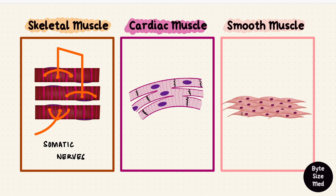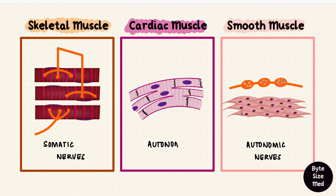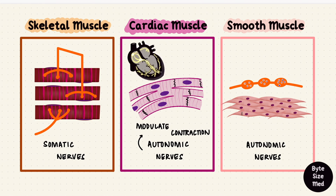Smooth muscles are supplied by autonomic nerves — the sympathetic and parasympathetic system — but they have varicosities at their terminations containing the neurotransmitter. Cardiac muscles are supplied by autonomic nerves as well, but these nerves don't initiate contraction of the muscle unlike with the other two; they only modulate contraction. The impulse for contraction of cardiac muscle comes from self-generating potentials in the pacemaker of the heart — that's the sinoatrial node.